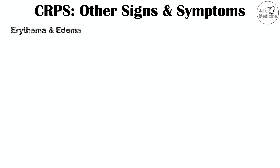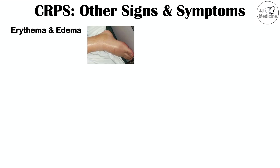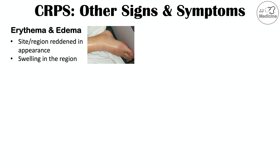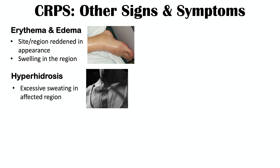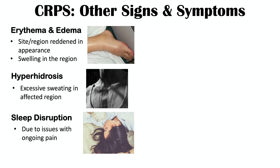Other important signs and symptoms include erythema — redness of the affected site due to vasodilation — and edema, or swelling. Hyperhidrosis, or excessive sweating in the affected area, can also occur as part of the autonomic dysregulation. Patients often experience sleep disruption as well, as ongoing pain with allodynia and hyperalgesia causes significant sleep disturbance.